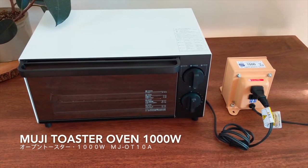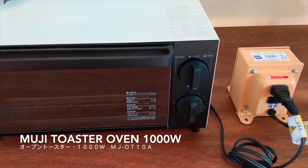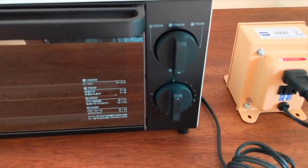This is an overview of the Muji toaster oven 1000 watts. This one I bought when I was in Japan for $60.